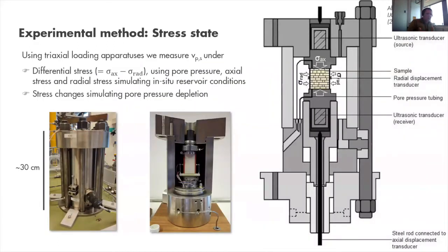In our lab, we use a triaxial loading apparatus to measure Vp and Vs. We measure Vp and Vs under differential stress using pore pressure, axial stress, and radial stress, simulating in situ reservoir conditions, and we apply stress changes simulating pore pressure depletion. The sample is located in the center, and we measure acoustic velocity using ultrasonic transducers located in the piston and caps — essentially shooting a wave at a certain frequency through the sample and looking at the arrival time at the receiving end.